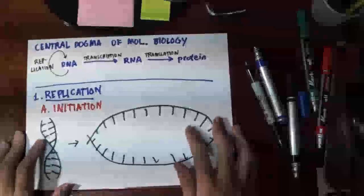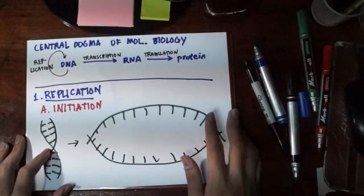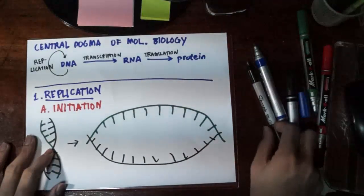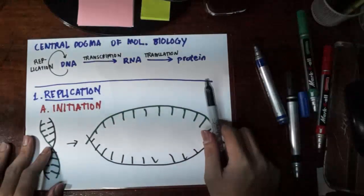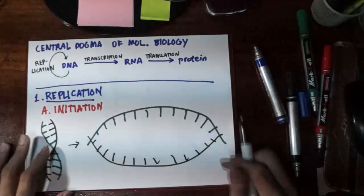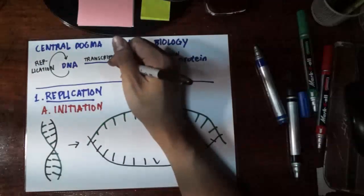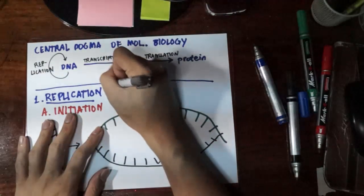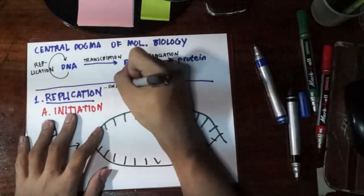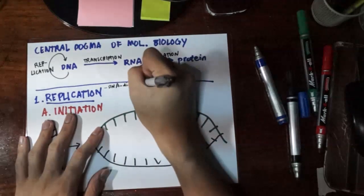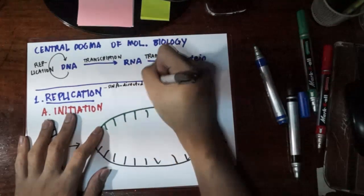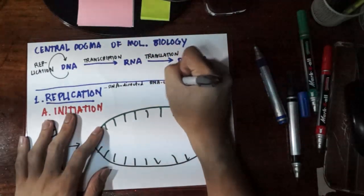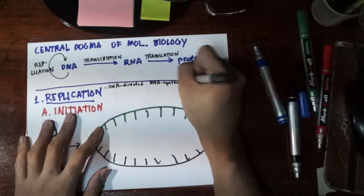We are now at the first part of the central dogma of molecular biology, and that is replication. In replication, we have DNA as our source and also DNA as our product. That's why replication can also be named as DNA-directed, because it is the source, and DNA-synthesis, because it is also the product or the one being synthesized.